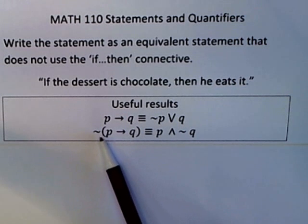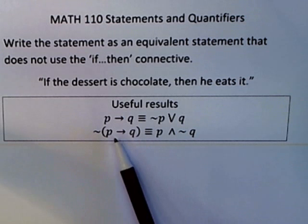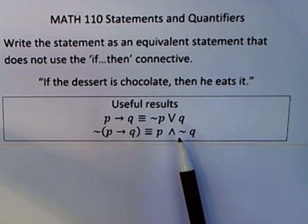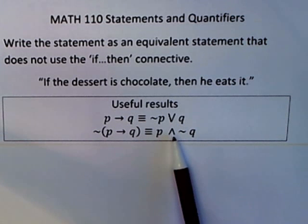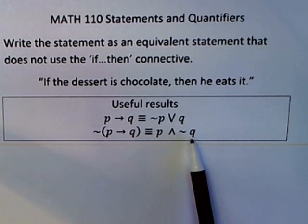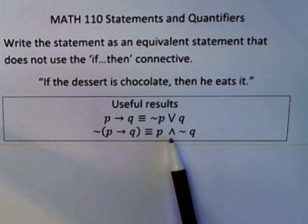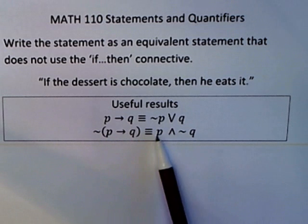If you want to write the negation of an implication without if-then, you write down p, combine it with an and with the negation of q. So for the negation of an implication, you always get an and, and you're negating the q and leaving the p alone.